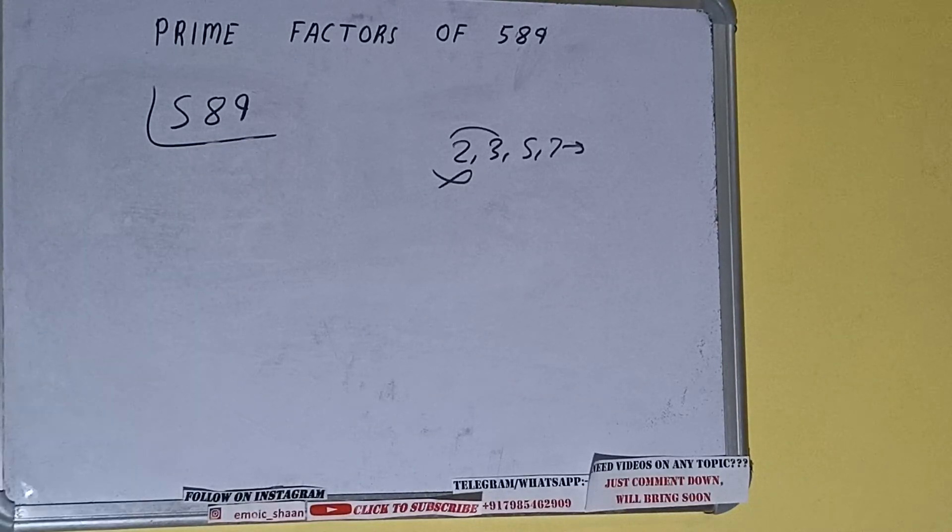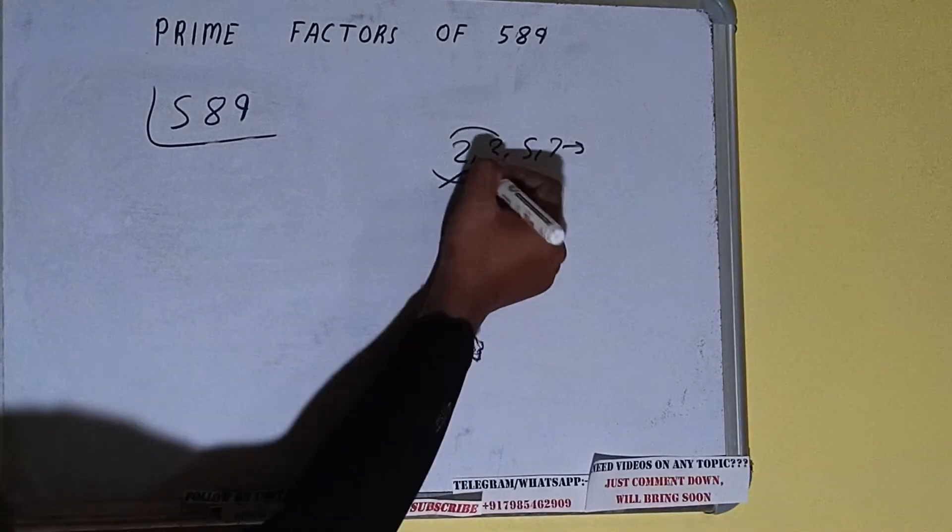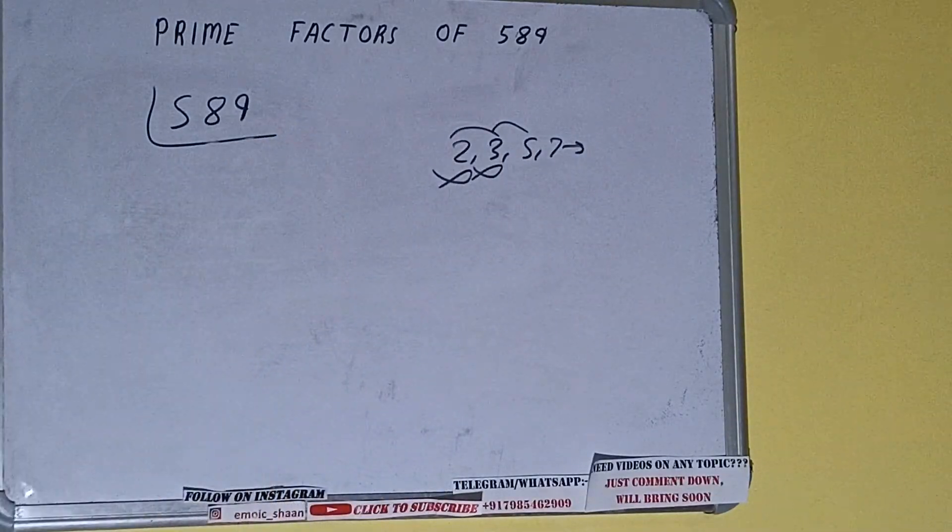Let's check with 5. The last digit is neither 5 nor 0, so it is not divisible by 5 also.